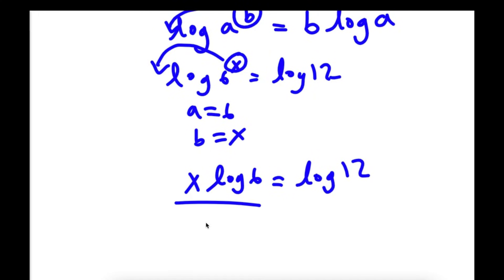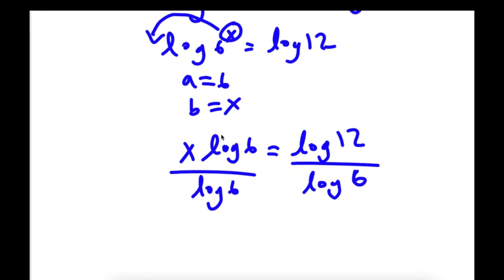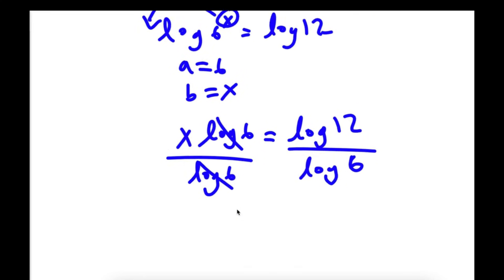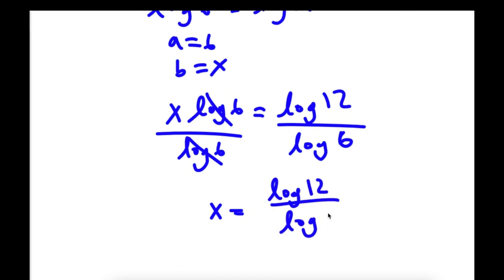Now I can divide both sides by log 6. These two cancel out and I would have x is equal to log 12 over log 6.